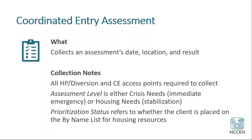Some of those diversion services would likely be crisis needs — for example, an assessment to determine if the client is being prioritized for emergency shelter — whereas the housing needs assessment would look more like the VI-SPIDAT that many communities use. There's also a question about prioritization status, which refers to whether the client is placed on the by-name list for housing resources. You'll mark whether or not the client was placed on that list.